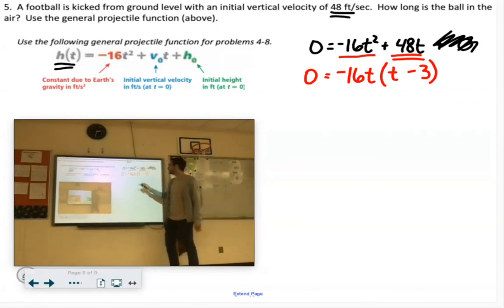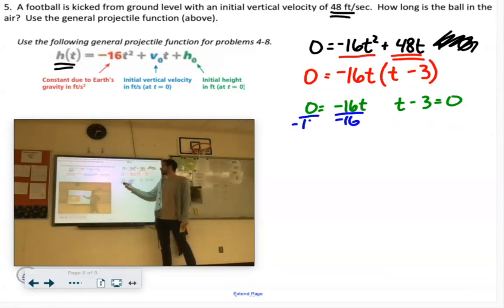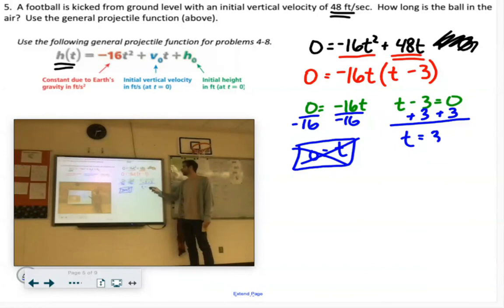We set each part with its own equation. Negative 16t equals zero, t minus 3 equals zero. Here we would divide, but we know it's going to come out to zero. So at zero seconds it's on the ground, but again, just like the last one, we already knew that. Here we would have to add the 3, which would give us positive 3 seconds.